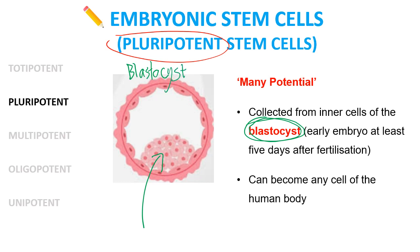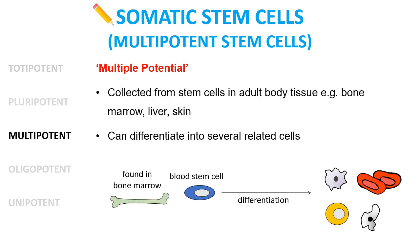Pluripotent embryonic stem cells are collected later than the 16-cell stage, still pretty early in the embryo's life cycle. They come from a structure called a blastocyst. The cells collected from the middle of the blastocyst can grow into becoming any part of the human body — they just can't grow into a placenta or umbilical cord, so you couldn't implant one via IVF and expect it to grow into a full baby.